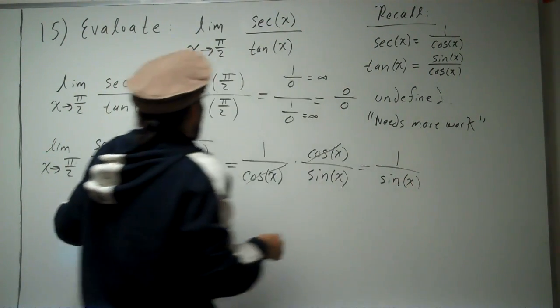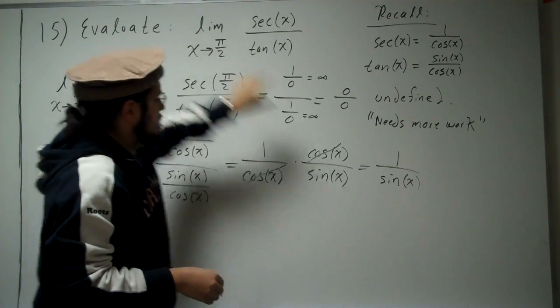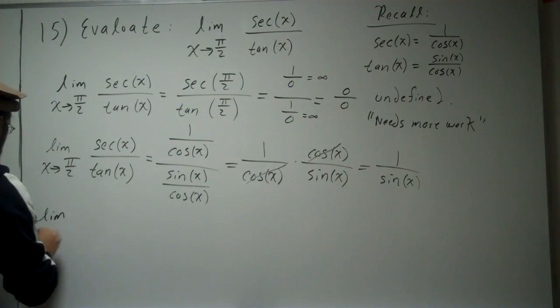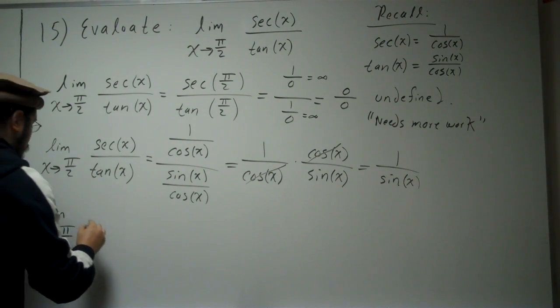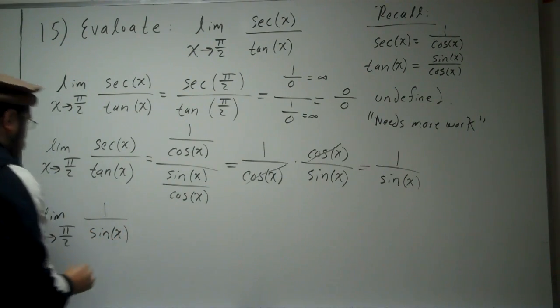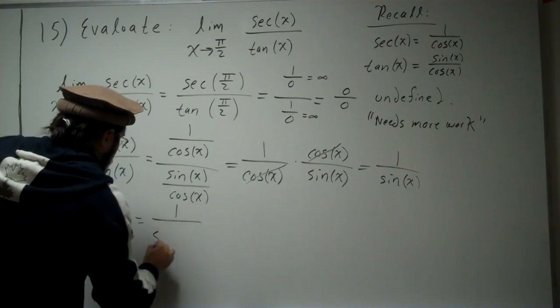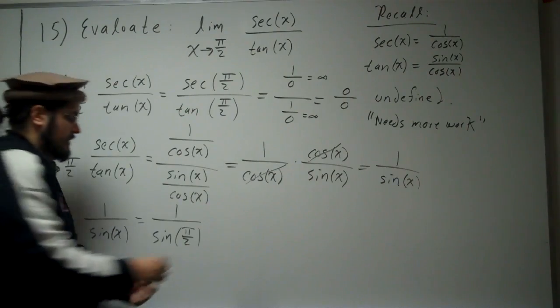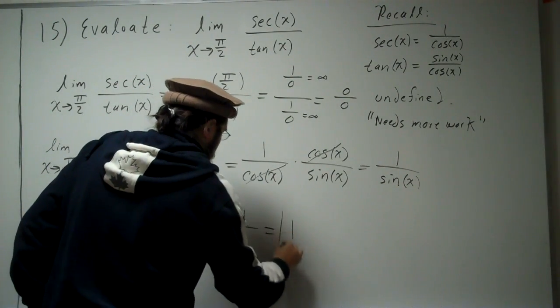So what does that mean? If you take the limit of this, it's the same thing as taking the limit of this. So let's try that now. Let's take the limit as x approaches pi over 2 of 1 divided by sine of x. So let's go ahead and plug pi over 2 in here. We get 1 divided by sine of pi over 2. But sine of pi over 2 is 1. So you obtain 1 over 1, which is defined as 1.